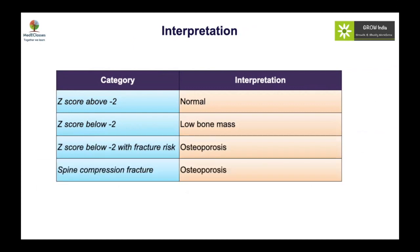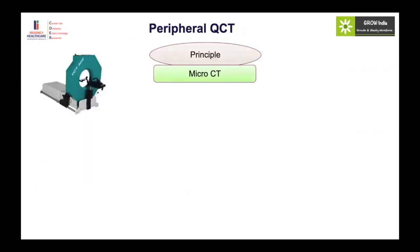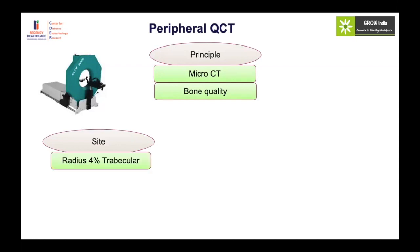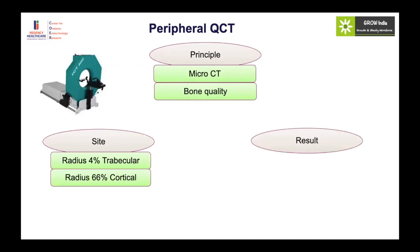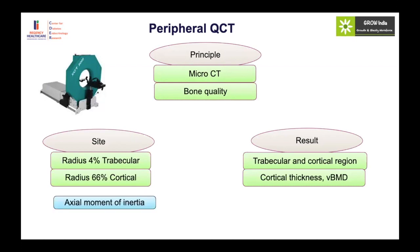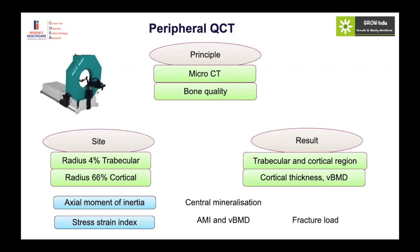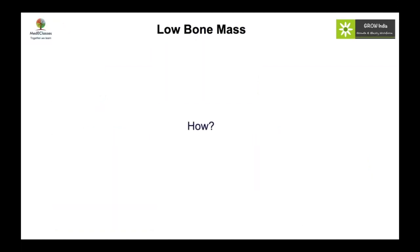A Z-score below minus 2 with fractures is labeled as osteoporosis in children. If someone already has a spinal compression fracture, you can label it as osteoporosis without waiting for the Z-score. pQCT is based on micro-CT technology and provides information about bone quality, particularly volumetric density, using the radius to assess both trabecular and cortical bone. It provides cortical thickness, volumetric density, and fracture strain threshold — a good way to evaluate true bone strength.